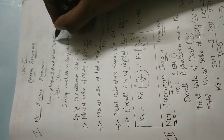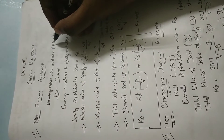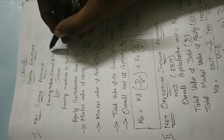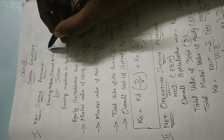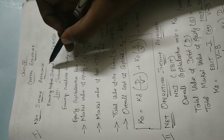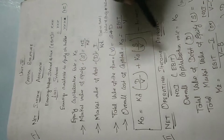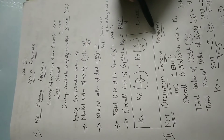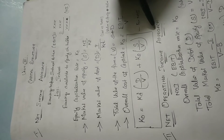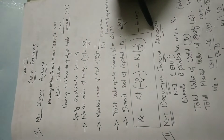Hi students, today we are going to see about the net income approach. Under the capital structure, there are four approaches: net income approach, net operating income approach, traditional approach, and Modigliani-Miller approach.